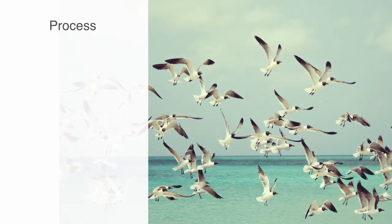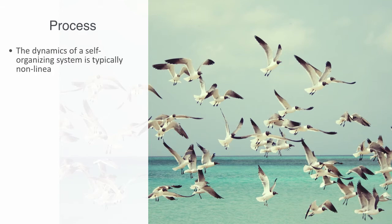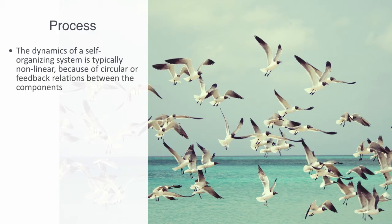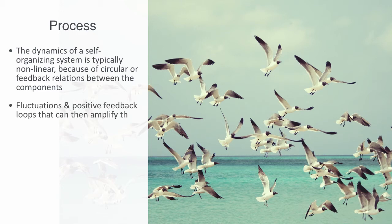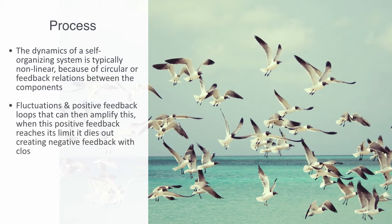We've been talking about self-organization on a generalized level, but we'll use the rest of this video to discuss in more detail its basic workings. Today, this process of self-organization is understood to take place through a number of key stages. The dynamics of a self-organizing system is typically non-linear, because of circular or feedback relations between the components. This involves some form of initial randomness or fluctuation, positive feedback loops that can then amplify these small events. When this positive feedback reaches its limits, it dies out, creating negative feedback with closed attractors forming, and finally, out of all of this, we get the emergence of some global pattern.